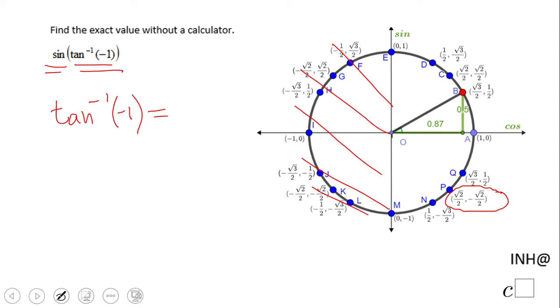It's right here: negative 45 degrees, which means in radians, negative π over 4. That's the only time when tangent is negative one.